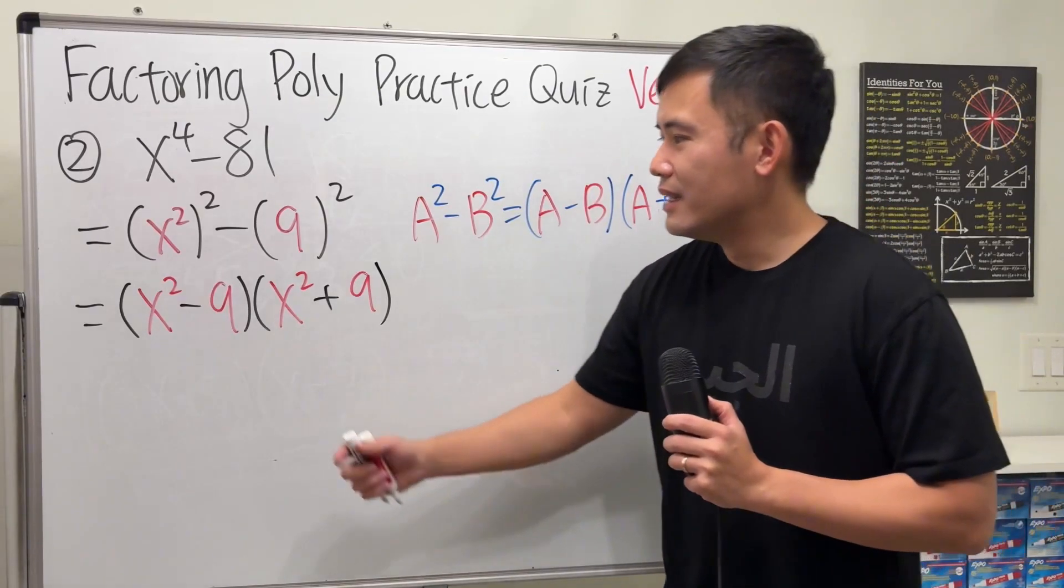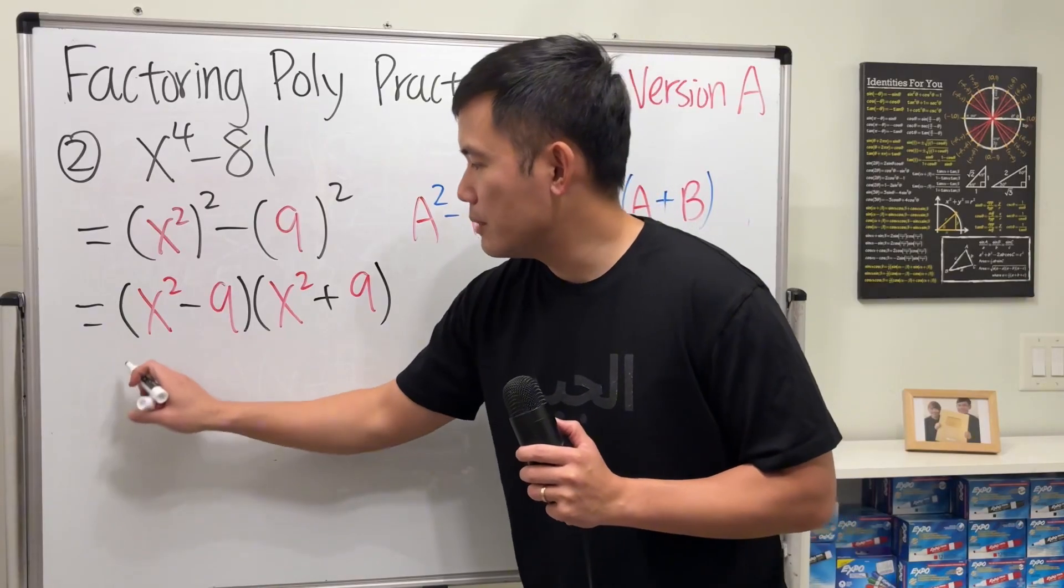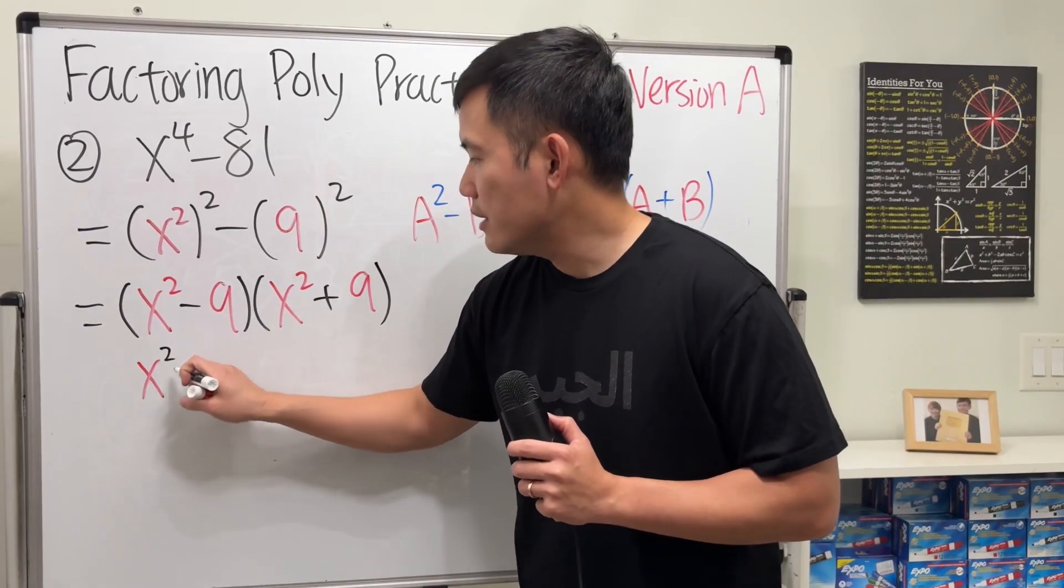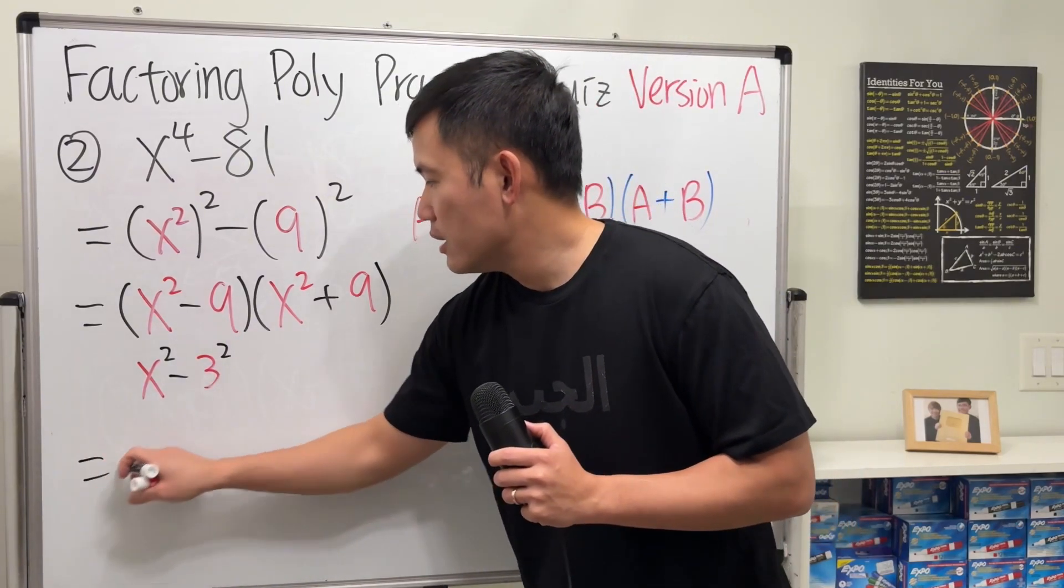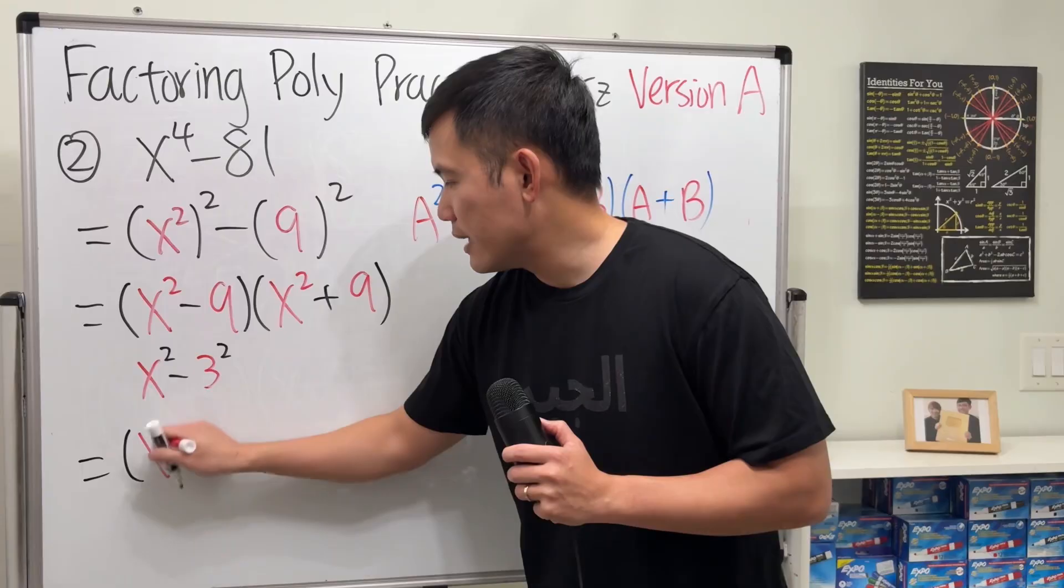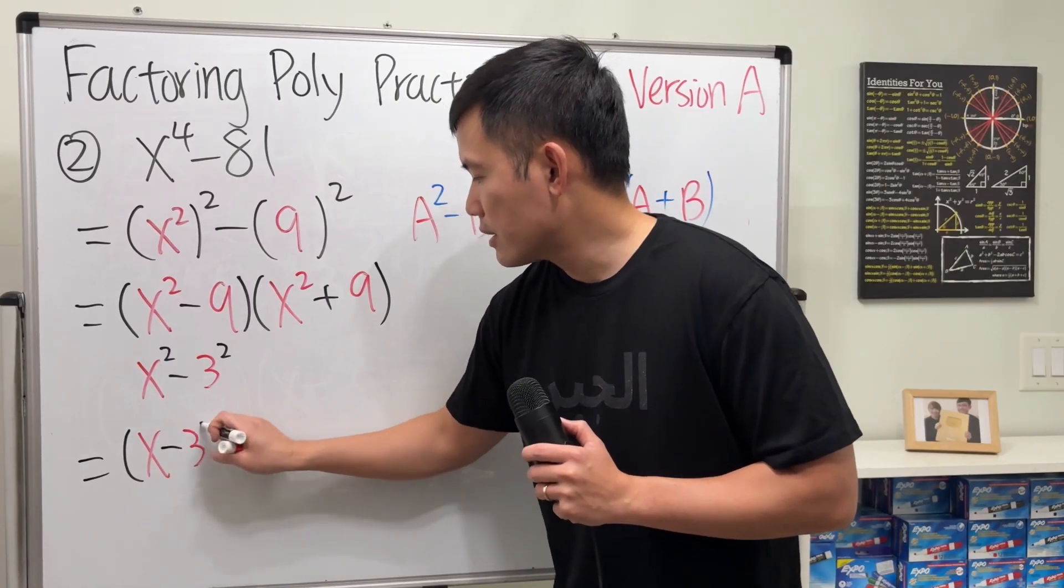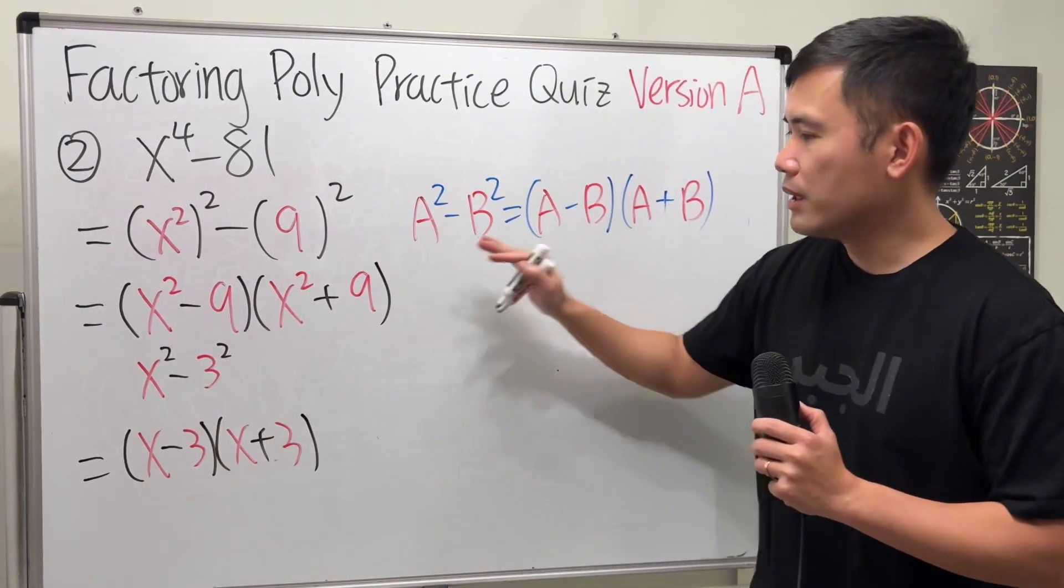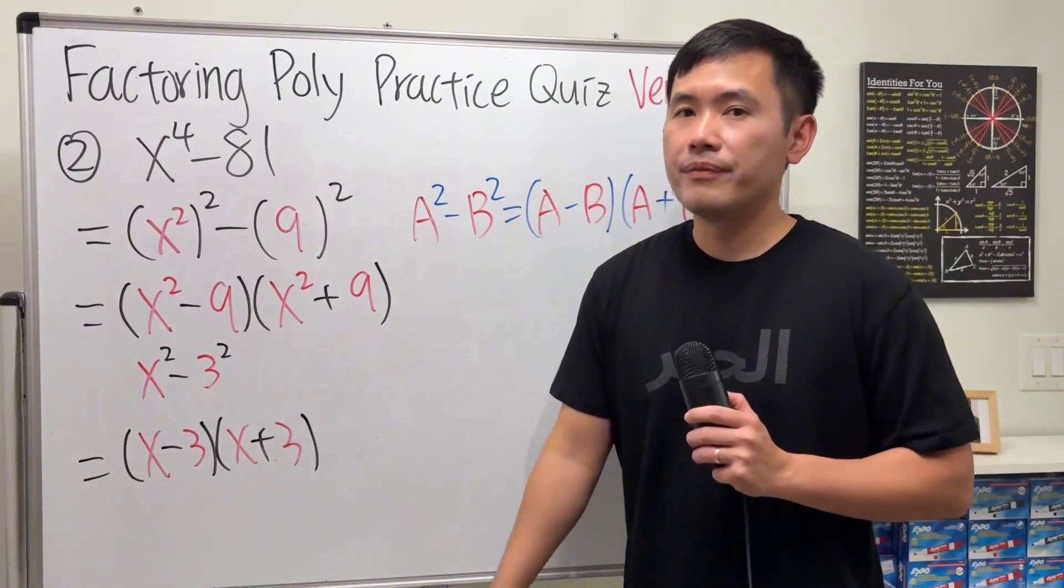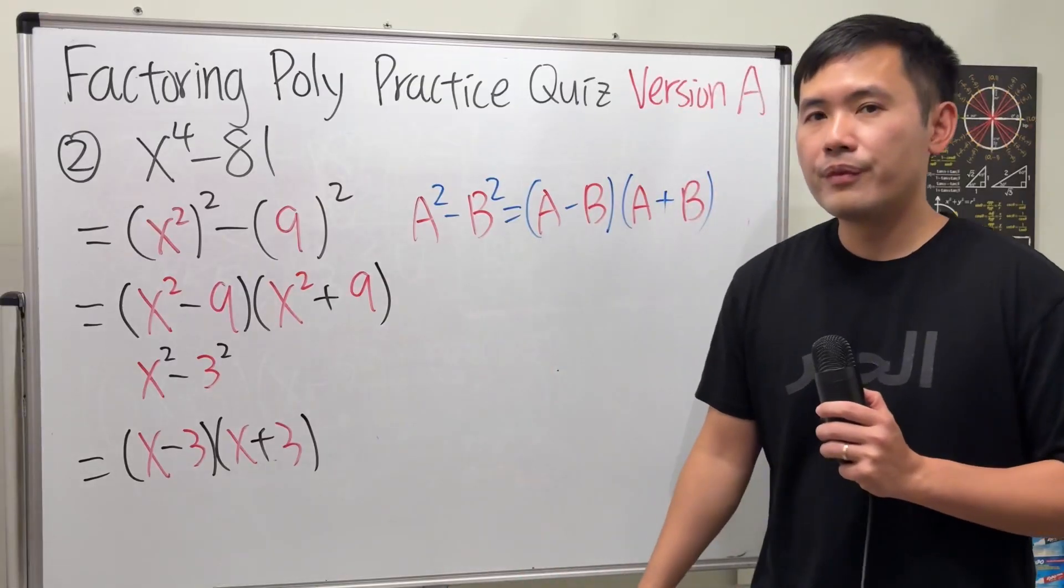This right here can be further factored because you can look at this as x squared, and then 9 is the same as 3 squared. So really, the first part is x minus 3 times x plus 3. We can use this formula to factor this right here again. How about for this right here though?